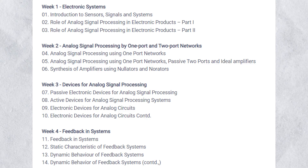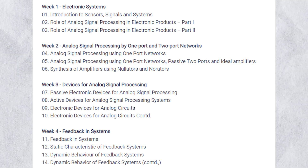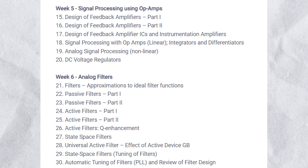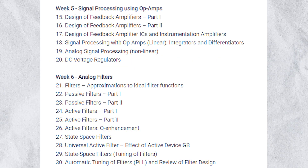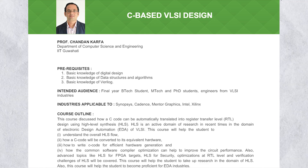Next is Analog Circuits and Systems. Again, check the course layout before enrolling. This course covers electronic systems, analog signal processing using one-port and two-port networks, devices for analog signal processing, feedback in systems, signal processing using op-amps, analog filters, waveform generators, PLL, and FLL.